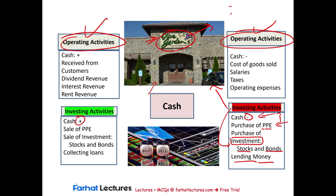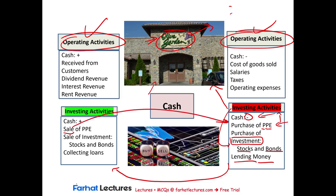The opposite of these activities are inflows of cash. At some point, Olive Garden might close stores and sell the building — that's a sale of property, plant, and equipment. They might sell kitchen equipment or a warehouse if they're downsizing. They can also sell those bonds and stocks they previously purchased — sale of investment. And when they lent money, the opposite is when they collect their loan. Those are positive cash flows.